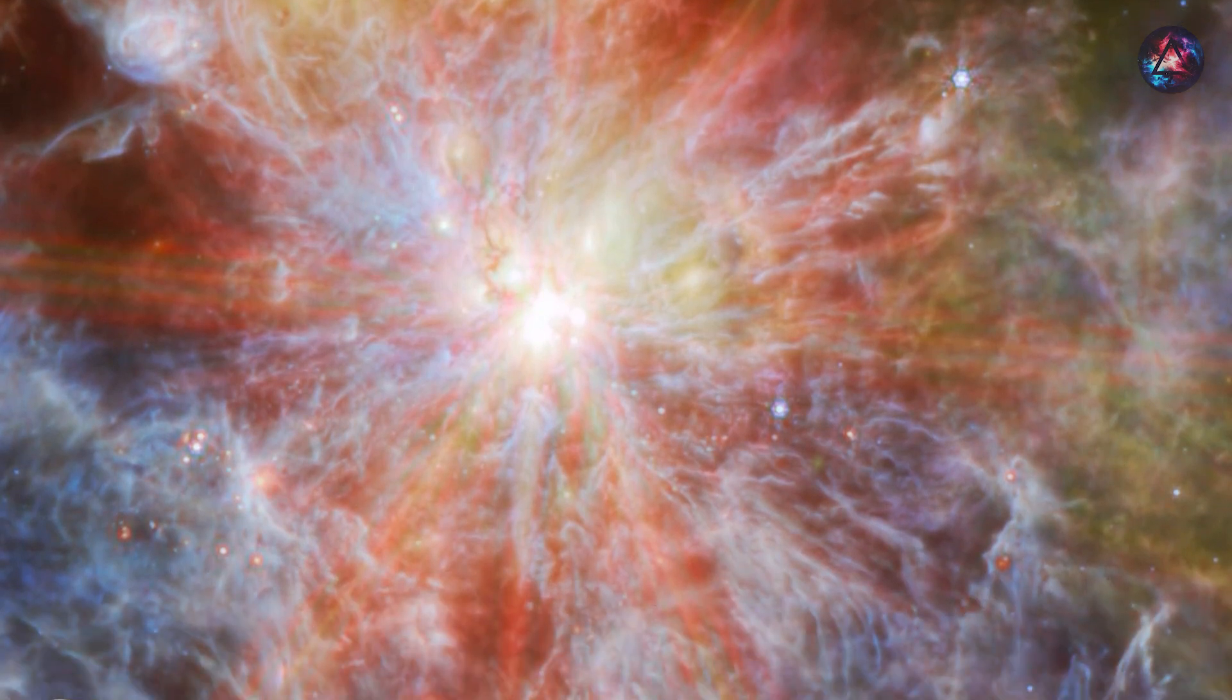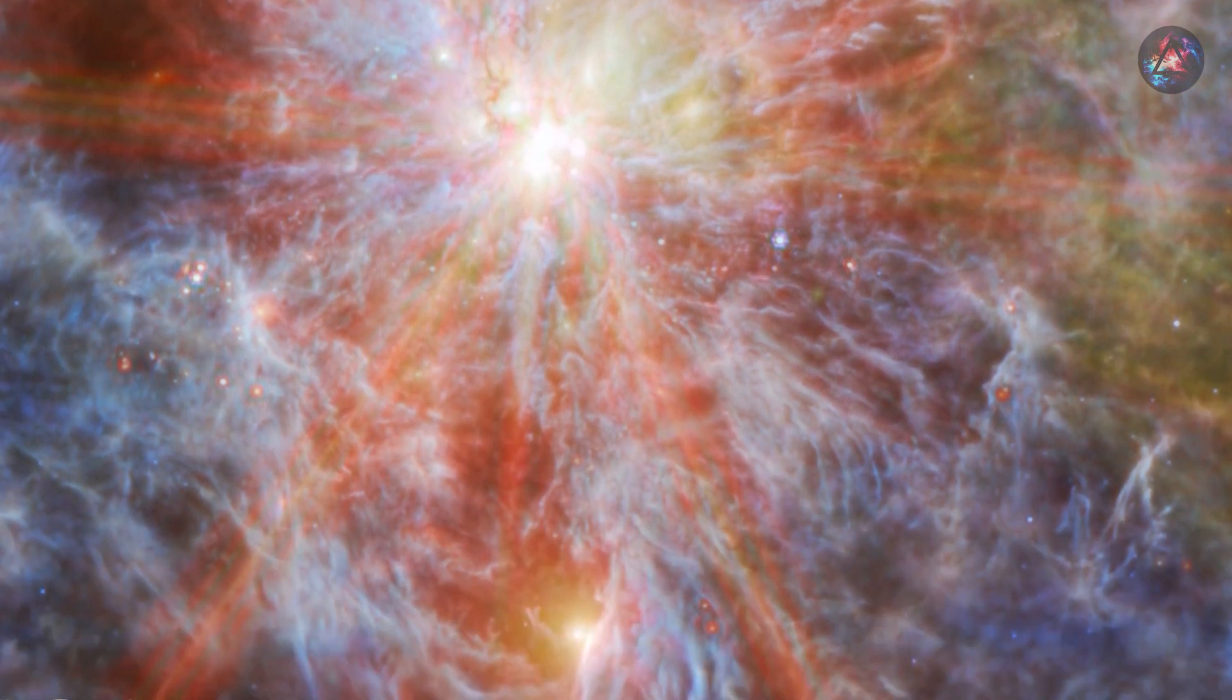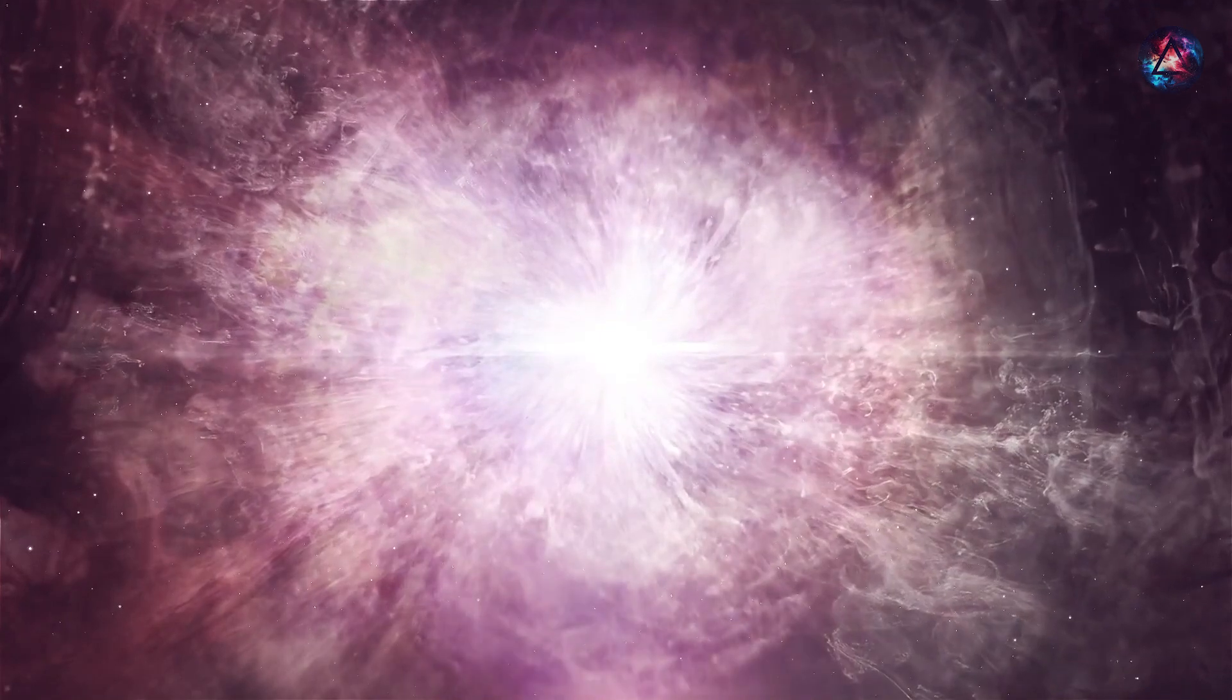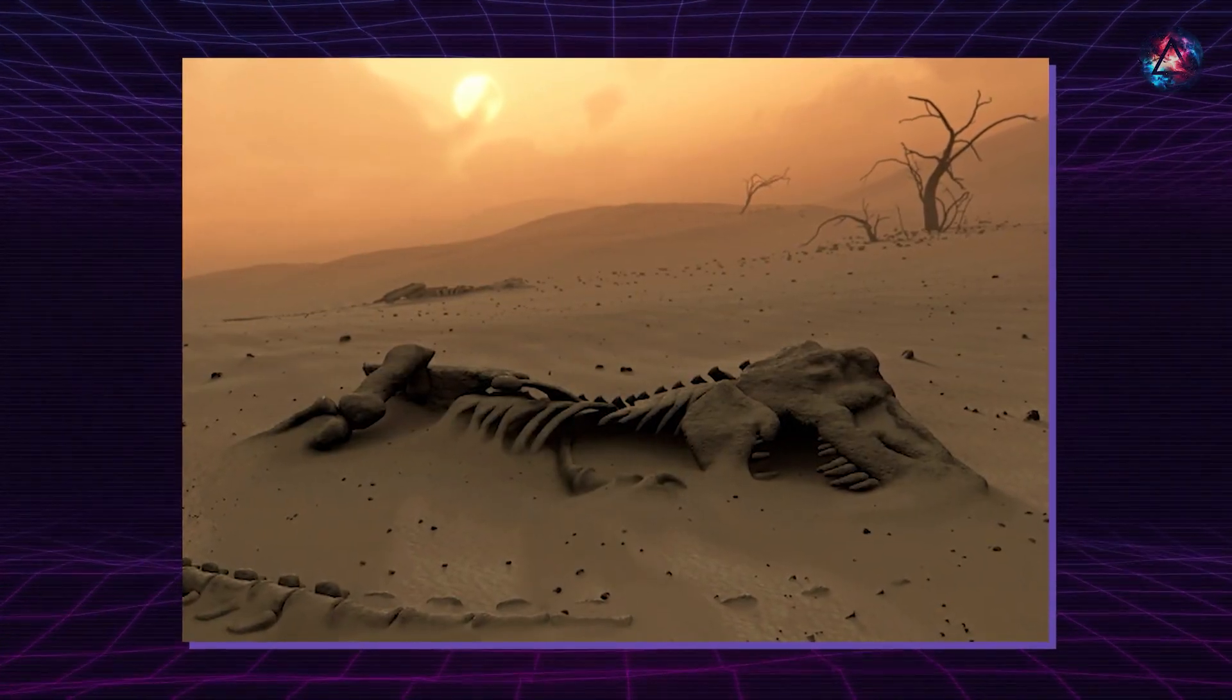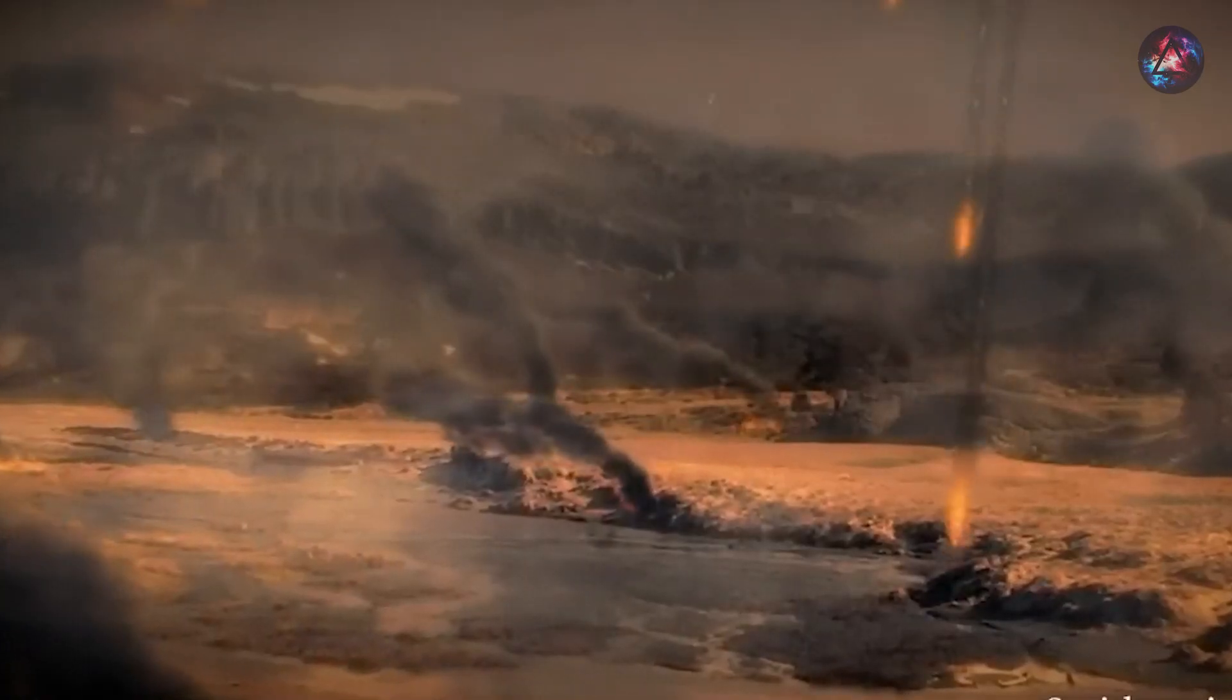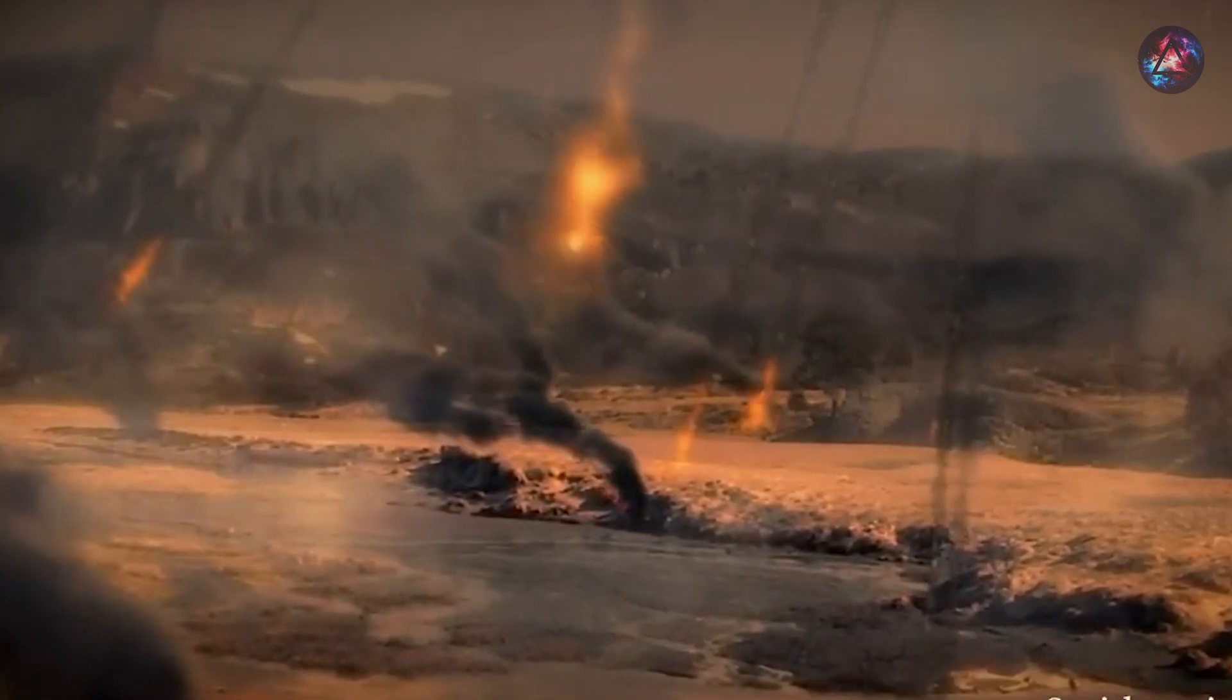While the chances of a close supernova posing a direct threat are slim, there's evidence from the past suggesting that a supernova might have played a role in a prehistoric extinction event. Fossils hint at a connection between a supernova and some crispy plant spores from around 360 million years ago.